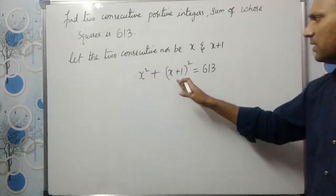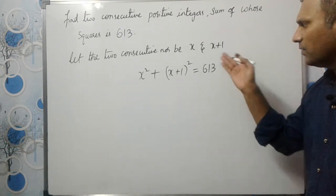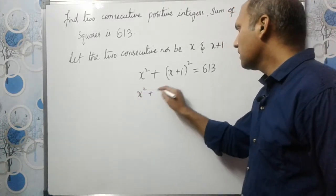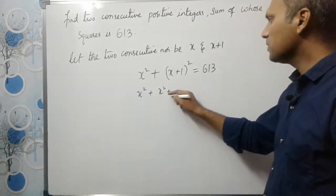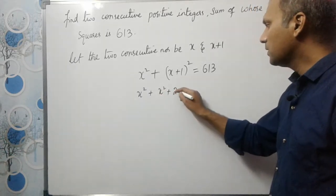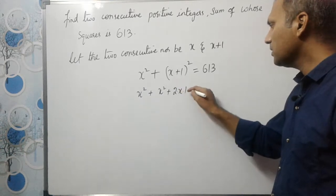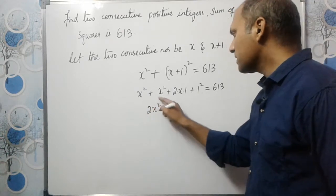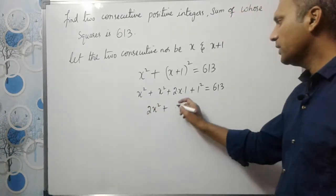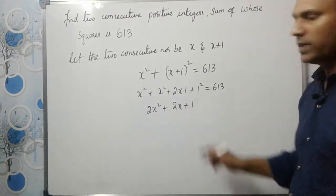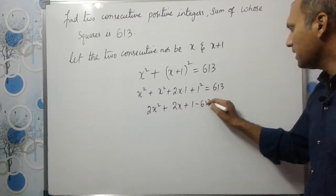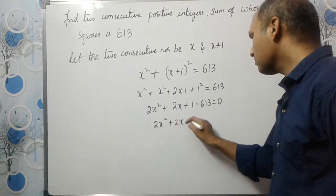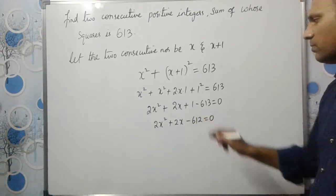Let us expand this using the (a plus b) whole square formula. We will have a quadratic equation. So x squared plus (x plus 1) squared gives x squared plus 2 times x times 1 plus 1 squared equals 613. Combining, we get 2x squared plus 2x plus 1 equals 613, and sending 613 to the other side gives 2x squared plus 2x minus 612 equals 0.